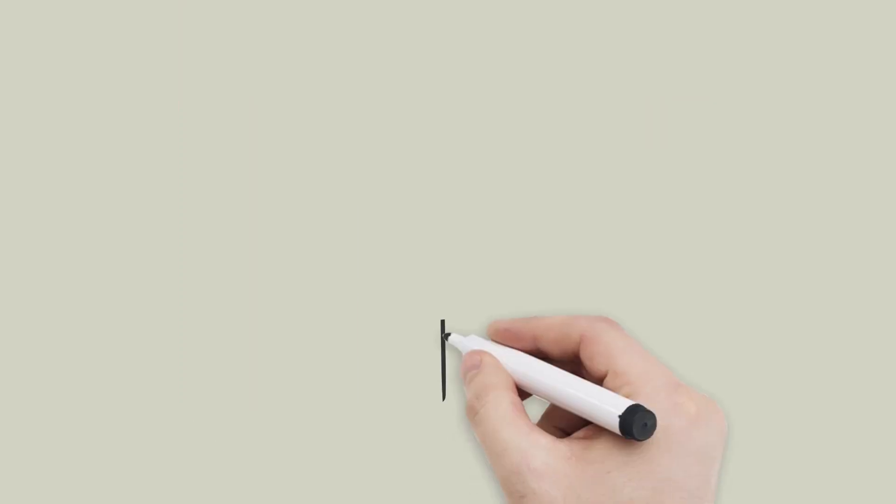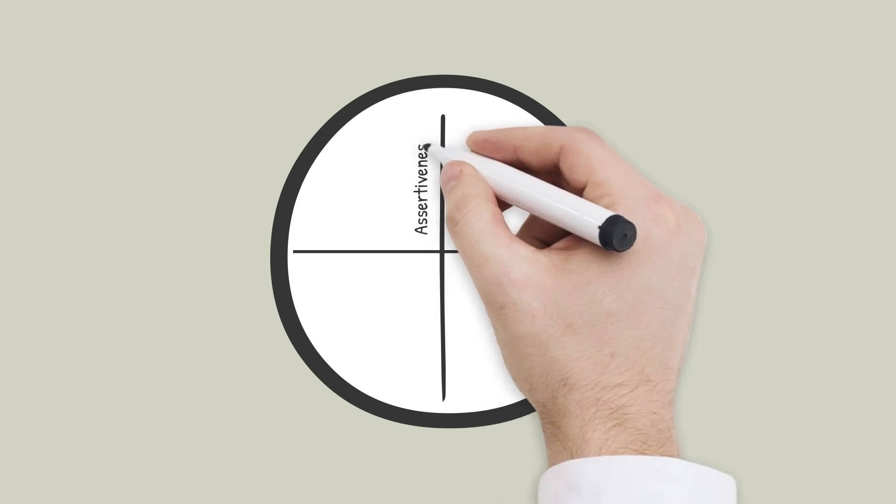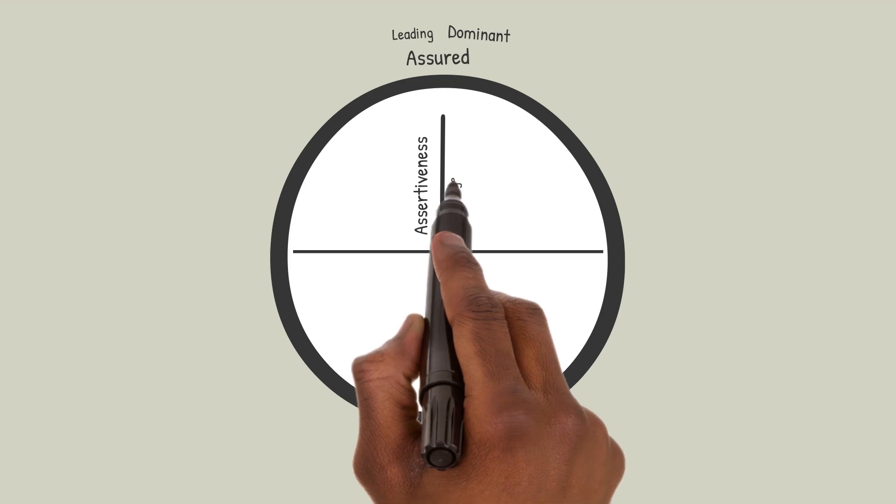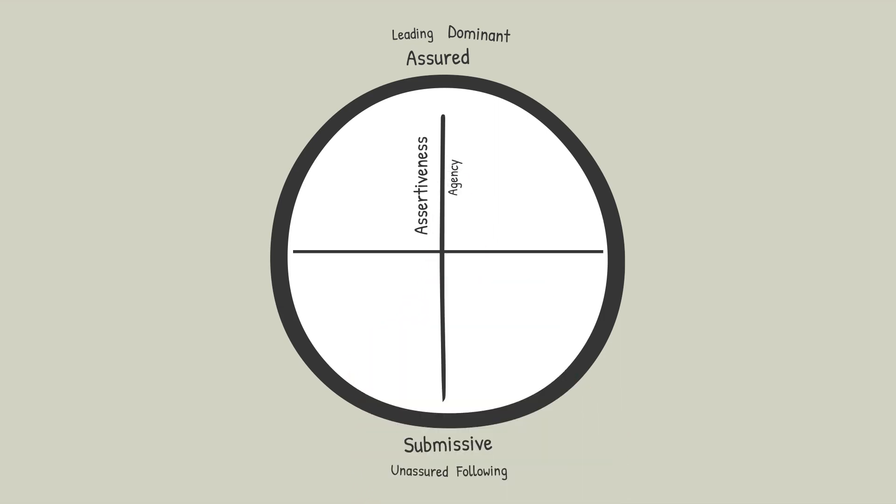The latest version looks something like this. The vertical axis is assertiveness. At a high level of assertiveness, you're exerting control over others, whereas at low levels, you're going along or submitting to what other people want. Some people call this axis agency, because to be agentic means to intentionally have an impact on objects and people.